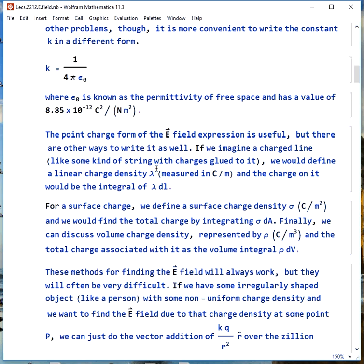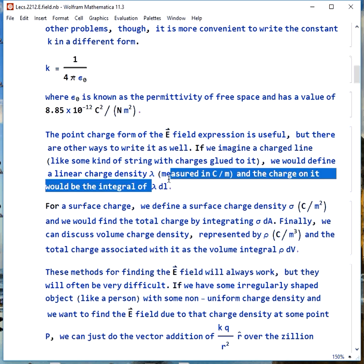The point charge form of the E field expression is useful, but we could write it other ways as well. What if we had a charged line, like some kind of string or dental floss or something with charges glued to it at regular intervals? We could define a linear charge density, lambda, and we'd measure it in Coulombs per meter, and the total charge would be the integral of that lambda, dl or dx.